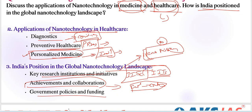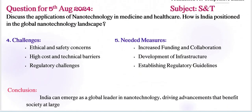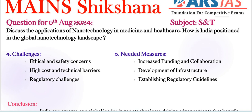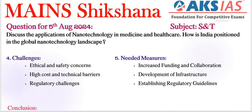Regarding government policies and funding, India's progress is constrained by limited funding compared to global leaders like the USA and China. Coming to the challenges part — this is very important and justifiable for the question tag 'discuss.' Not only positives or significance, but we need to write challenges as well, whether they ask or not. Whenever the question tag 'discuss' is observed, we need to cover significance, challenges, and measures.